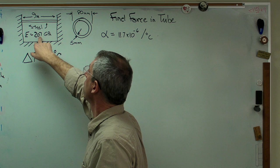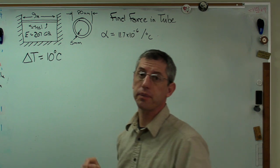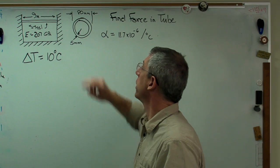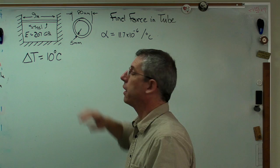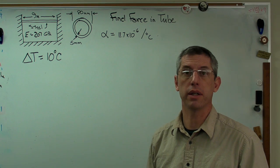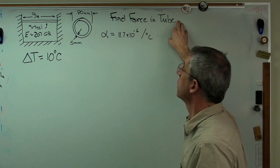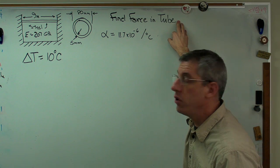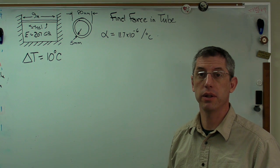And I've got a steel bar across it with E of 207 gigapascals. The diameter of the tube is 80 millimeters and it's got a 5 millimeter wall thickness. So it's pretty heavy, but it's fairly thin. What I want to do is find the force in the tube due to a temperature change of 10 degrees Celsius.